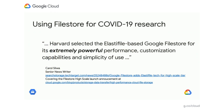Harvard selected the Elastifile-based Google FileStore for its extremely powerful performance, customization capabilities, and simplicity of use. This is an example of where FileStore High Scale has helped Harvard with COVID-19 research. They've been doing virtual screening of potential COVID-19 treatments, and have found some promising candidates through this research. We've got a really extensive write-up about this on our launch blog. This is a good example of a batch compute workload where FileStore's scale-out performance helps with high-throughput computing work.